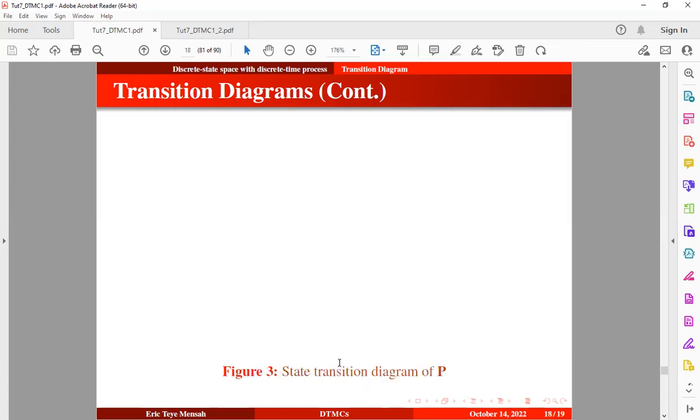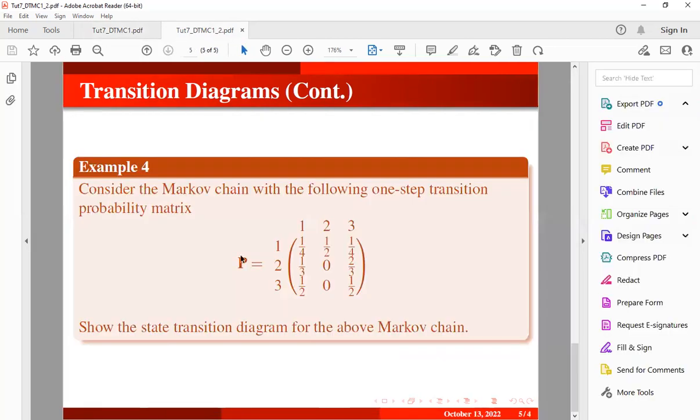Let's take a look at the solution. So we have three states here. We know the transition from state 1 to itself is 1 out of 4. We can see that from here. Transition from state 1 to itself is 1 out of 4. Transition from state 1 to state 2 is 1 out of 2, and to that of state 3 is 1 out of 4.